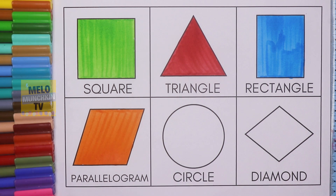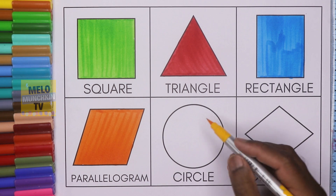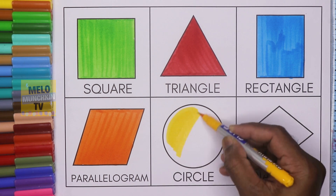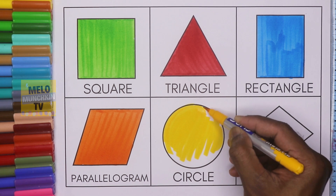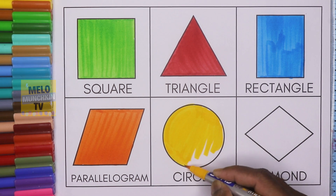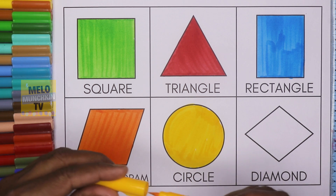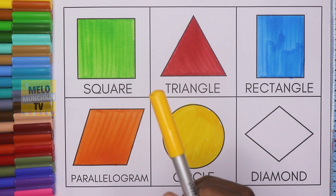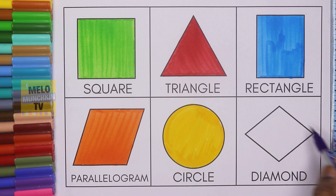This is parallelogram and this is orange color. Next, I'll take yellow color to color the circle. This is circle, let's color it. This is circle and the color is yellow. Next, I'll take purple color to color the diamond. This shape is called diamond.